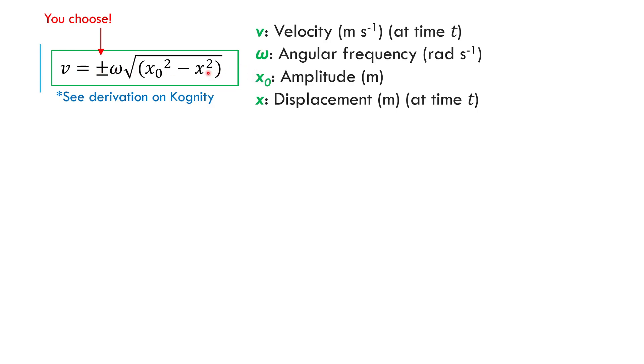You need to use the context of the problem to decide the direction. But otherwise, everything is the same. You just plug in the displacement of the particle at the time you care about and find the velocity at that same time. Nice convenient equation if you remember it's there.